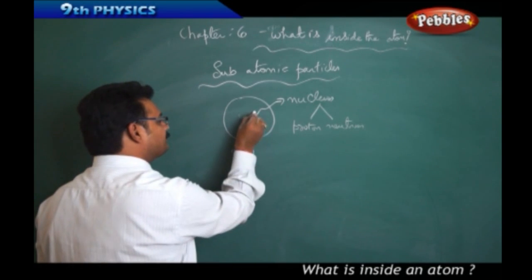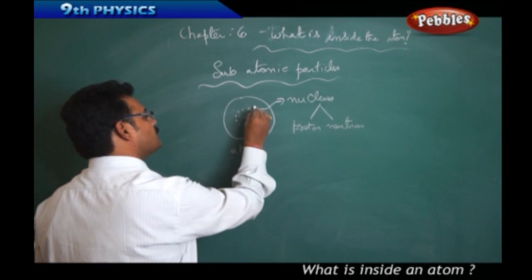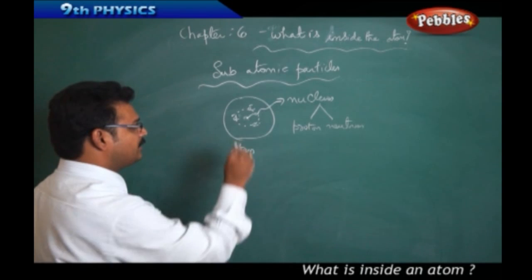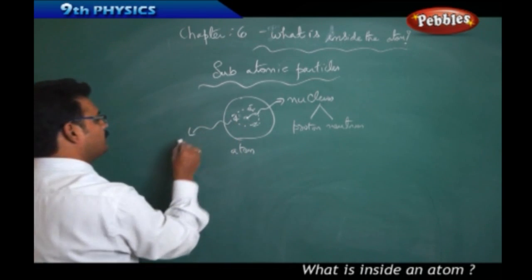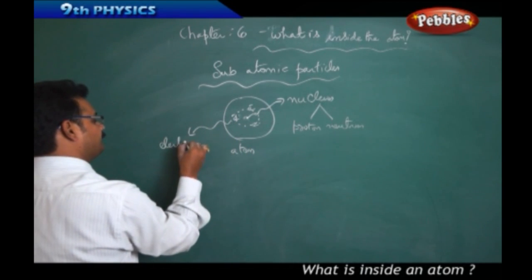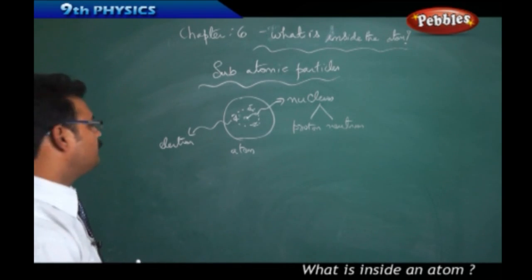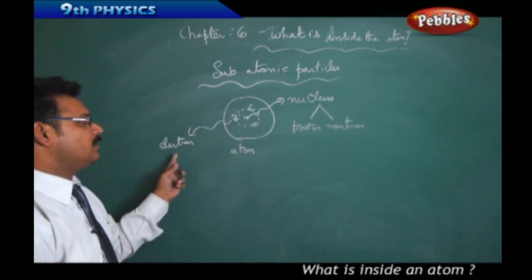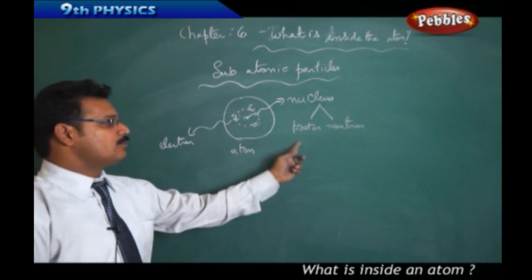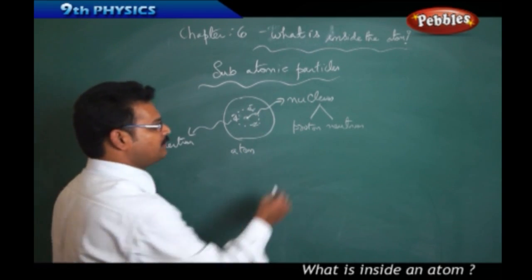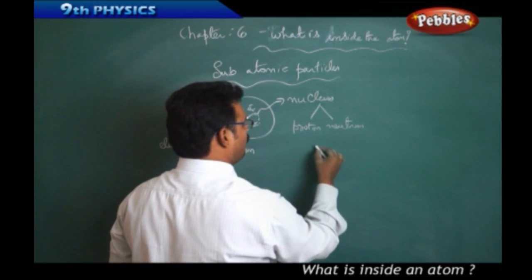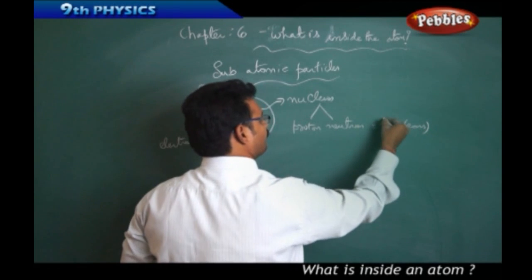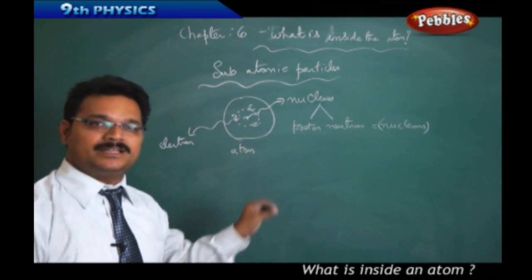Around the nucleus, in orbits, negatively charged particles rotate, and these are called electrons. So they found three types of particles: electron, proton, and neutron. Electrons orbit around the nucleus, while protons and neutrons are inside the nucleus. Because they are inside the nucleus, protons and neutrons are also called nucleons — meaning particles inside the nucleus.